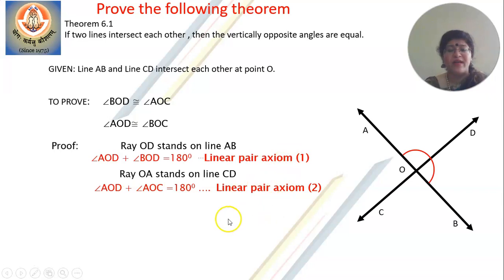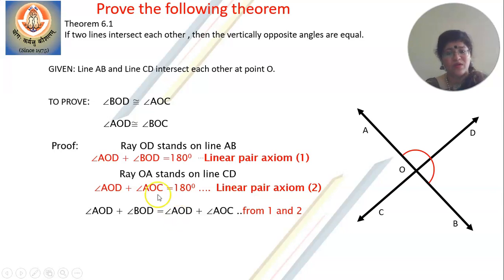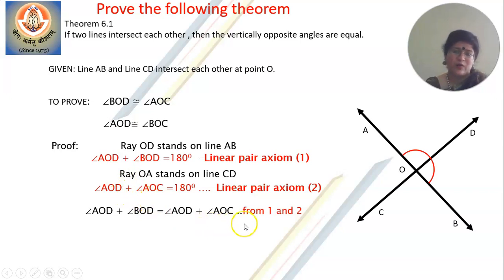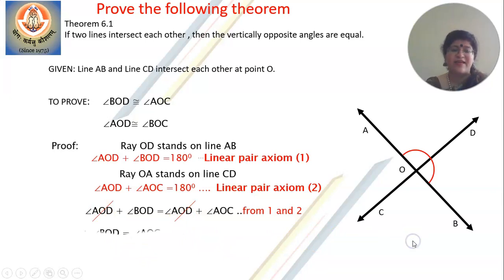Compare statement 1 and 2 — the right-hand side is equal (both are 180 degrees), so the left-hand sides will also be equal. You get angle AOD plus angle BOD equals angle AOD plus angle AOC. The next step is to cancel out AOD from both sides — when you shift AOD it becomes AOD minus AOD, so it cancels. After cancellation, we get angle BOD is congruent to angle AOC.